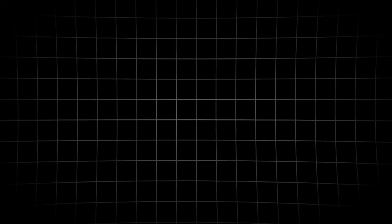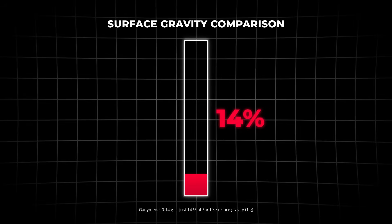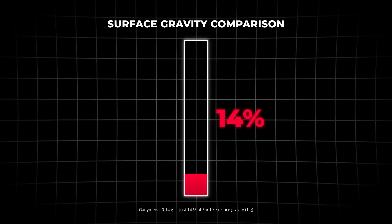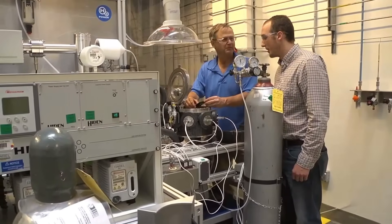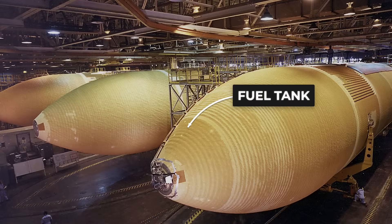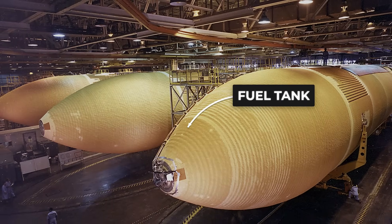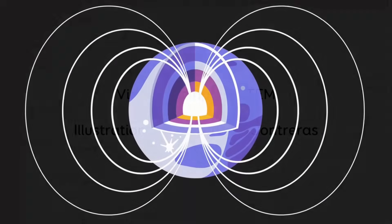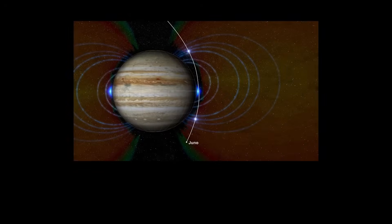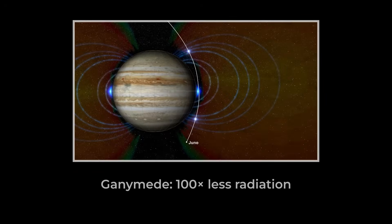With a diameter of 5,268 kilometers, it's even bigger than Mercury. Its surface gravity is just 14% of Earth's, making it easy to land and launch heavy equipment. Beneath a thick shell of water ice, up to 200 kilometers deep, lies a subsurface ocean holding more water than all of Earth's seas combined. That water can be split into hydrogen and oxygen, providing both fuel and the building blocks for life support. Ganymede is also unique among moons: it has its own magnetic field, offering a measure of protection from Jupiter's intense radiation belts.